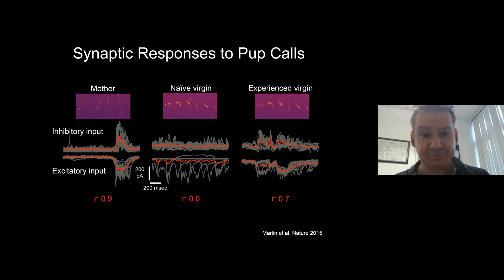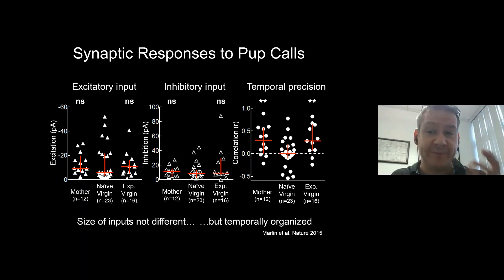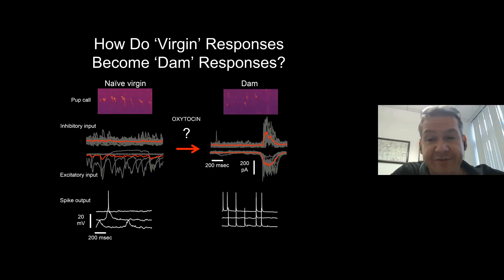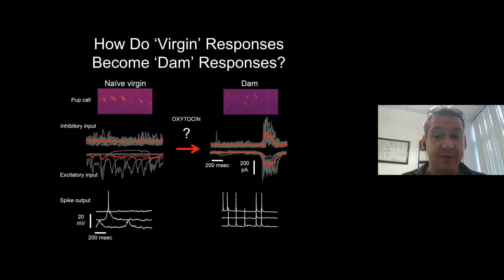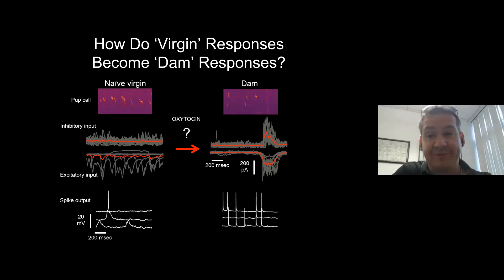It's not that maternal animals get more synaptic input. The total amount is about the same. It's just the temporal patterning — the organization and reliability of inhibition relative to excitation — that is much higher in retrieving animals than in naive virgins. Oxytocin is a disinhibitory neuromodulator that decreases the amplitude of evoked inhibition. That might amplify any incoming signal in the moment of heightened oxytocin tone, and disinhibition is also an effective mechanism for gating long-term synaptic modifications by opening a window for NMDA receptors to be activated, consolidating changes and rewiring the maternal brain to respond to pup call sounds.